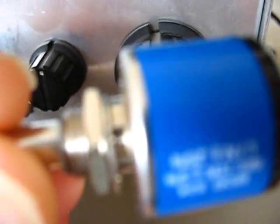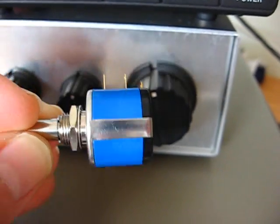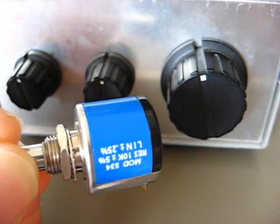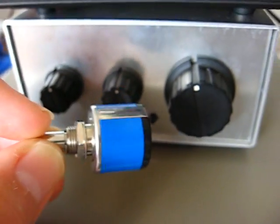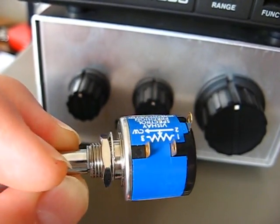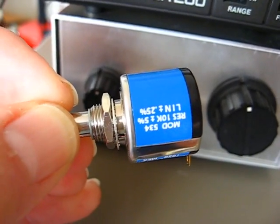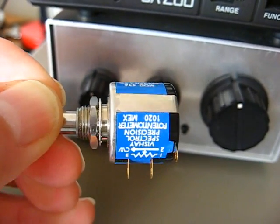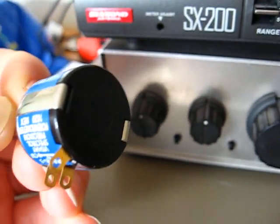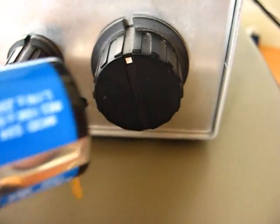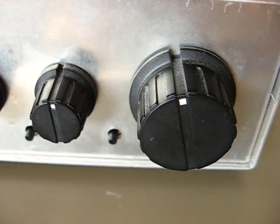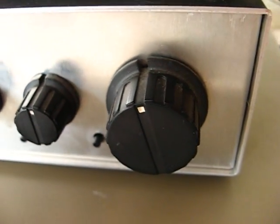There it is, as you see. It costs me just a fraction under 9 pounds, UK pounds, from RS. It's a Vishay, Vishay 10 turn, 10k pot. So we're going to put that in there and we should be able to cover the whole of 20 meters with it.